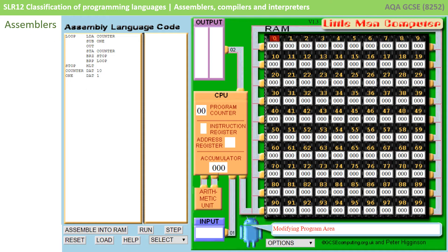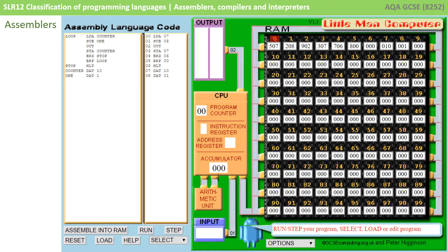Here we can see a program written in assembly language using what's known as a Little Man Computer, simply as a simulation tool. Before we can run the program we need to tell our assembler to assemble the code into RAM. When we do this we notice that in the memory we've now got some denary numbers — really these are going to be in binary — but we can see how the assembler has changed the assembly language into a machine code equivalent.